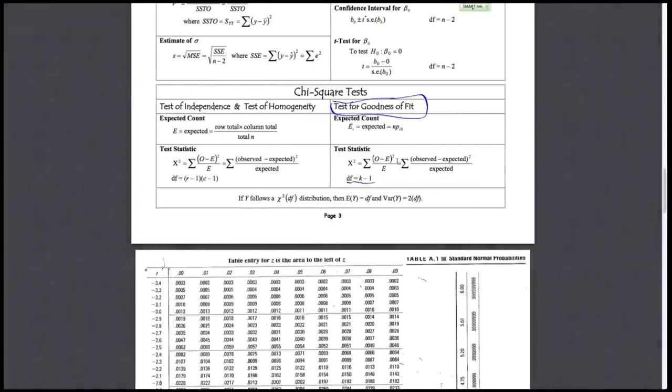Here's the expected value of our test statistic. It's just the degrees of freedom, which is k minus one, where k is the number of groups we have. And the standard deviation is just two times the degrees of freedom.